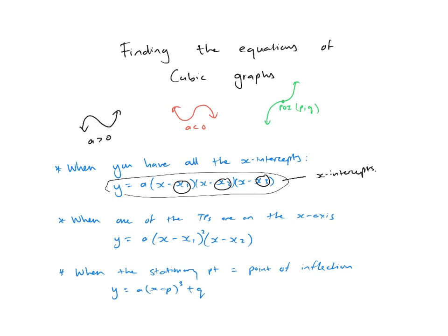You just put x₁, x₂, and x₃ into the brackets. Then you need another point — any point other than an x-intercept. You substitute that point's x into all the x's and Y into Y to find A. Because there's an infinite number of graphs that can go through x₁, x₂, and x₃ — the graph could be much higher, or if A is negative it would flip — so A makes a big difference.